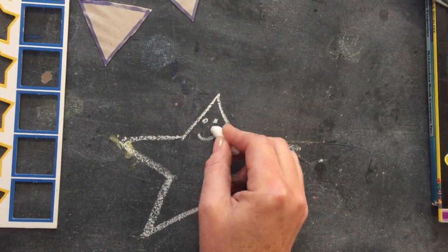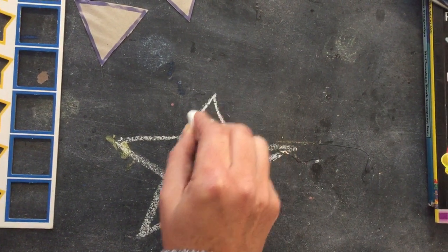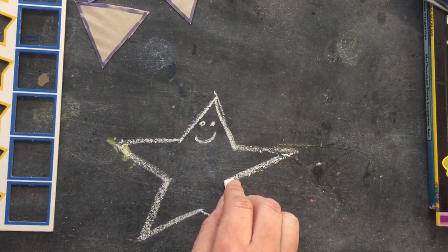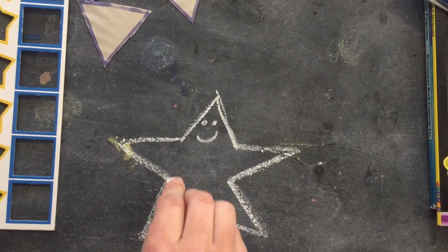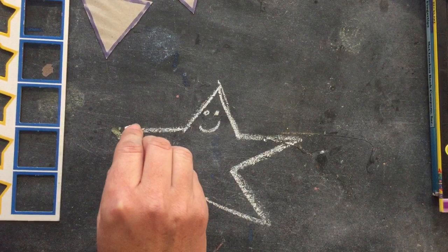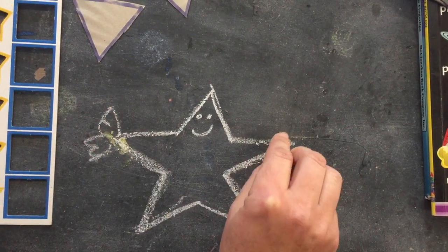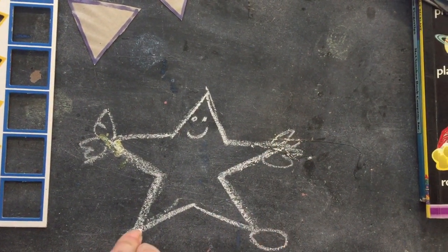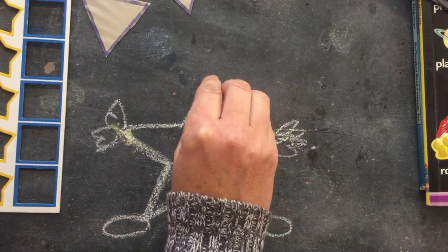Let's make a little face for Mr. Star. There's his head, a triangle head, triangle arms, triangle legs, and a triangle arm on that side. Let's put his little hands and his feet and a hat.